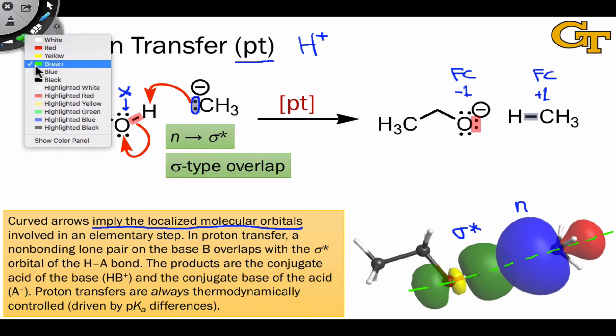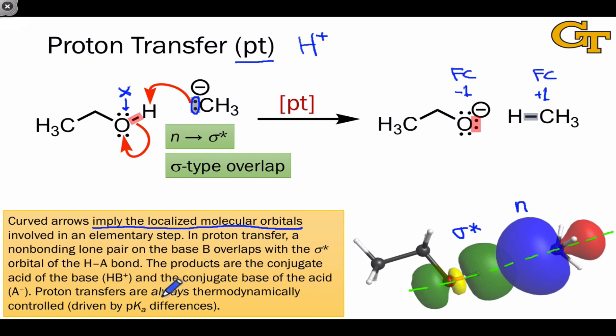Proton transfer as an elementary step is relatively remarkable in organic chemistry because proton transfers are always rapid, and so they're always thermodynamically controlled or in equilibrium. Another way to say this is that proton transfers are driven by pKa differences—driven by differences in acidity, as we've expressed it here, or basicity, which is an equivalent way to express it, in the reactants and products. We're going to unpack this idea over the next few videos.